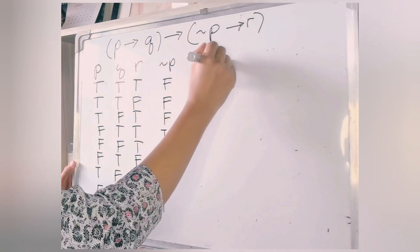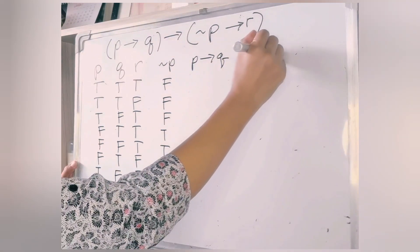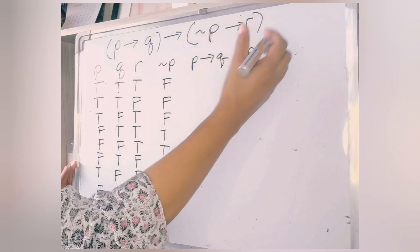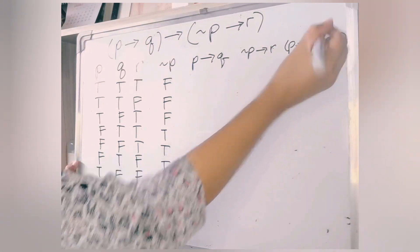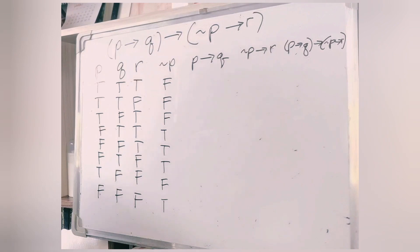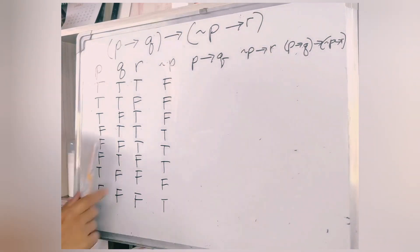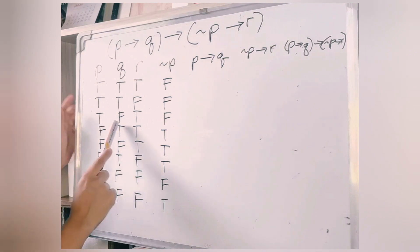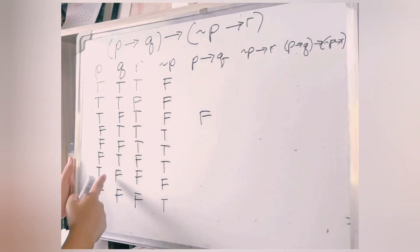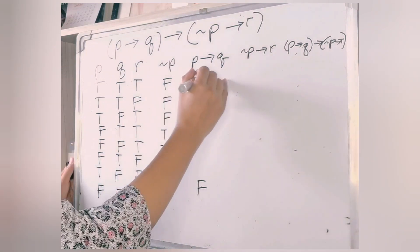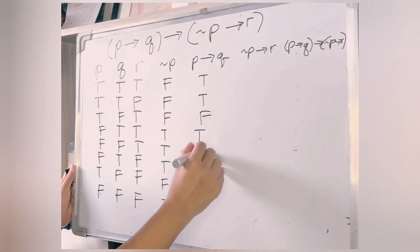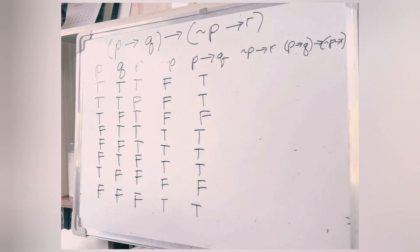Next, we evaluate P implies Q. Remember that there is only one false case — when true implies false. Looking through the rows, we identify those cases: true implies false gives false, and again true implies false gives false. The rest are all true, so we get six true cases and two false cases for P implies Q.